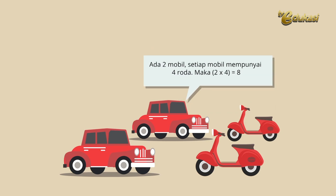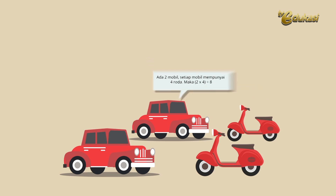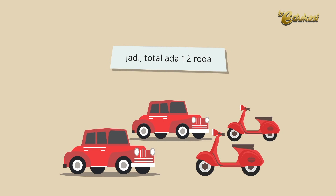Ditambah, ada 2 mobil, setiap mobil mempunyai 4 roda. Maka, (2×4) sama dengan 8. Jadi, total ada 12 roda.